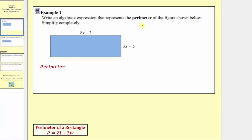In general, to find the perimeter of a polygon, we sum the lengths of all the sides. But in this case, because we have a rectangle, we can write the algebraic expression using the formula p equals 2l plus 2w, which means the perimeter is equal to 2 times the length plus 2 times the width. Because we're looking for an expression for the perimeter, not an equation, we're only going to be using the right side of this formula. So our expression will be in the form of 2l plus 2w.